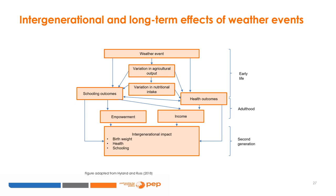Exposure to weather shocks in early childhood might have intergenerational impacts. This passes first through the influence of a mother's health — poorer health conditions of women who suffered a negative weather event in early childhood led them to give birth to low-weight babies, as shown by Highland and Rust, 2009. The intergenerational impact also affects household wealth and mothers' empowerment. Poorer households and less empowered mothers invest less in their offspring's schooling and health. The existence of second-generation effects indicates that it is important to implement solutions to mitigate the effect of weather shocks to avoid the perpetuation of poverty.